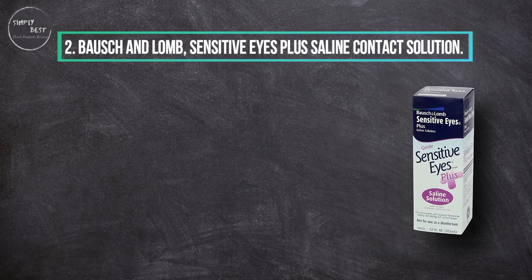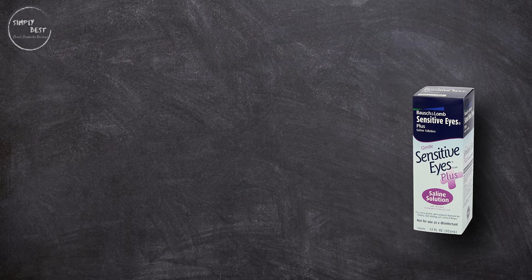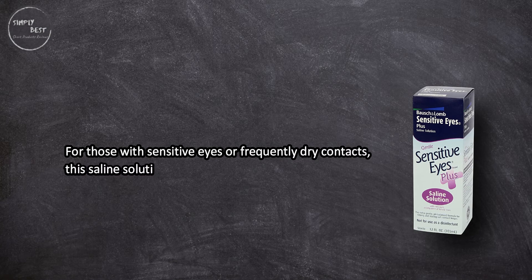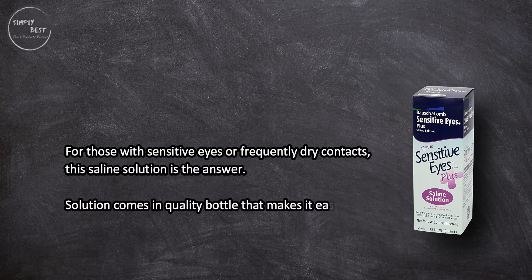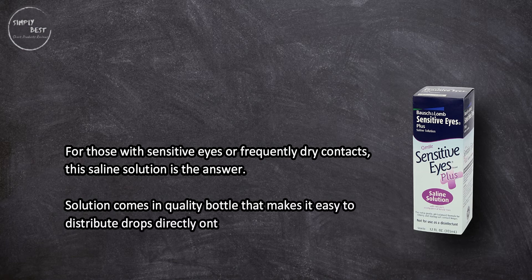At number two, Bausch & Lomb Sensitive Eyes Plus Saline Contact Solution. For those with sensitive eyes or frequently dry contacts, this saline solution is the answer. The solution comes in a quality bottle that makes it easy to distribute drops directly onto lenses.